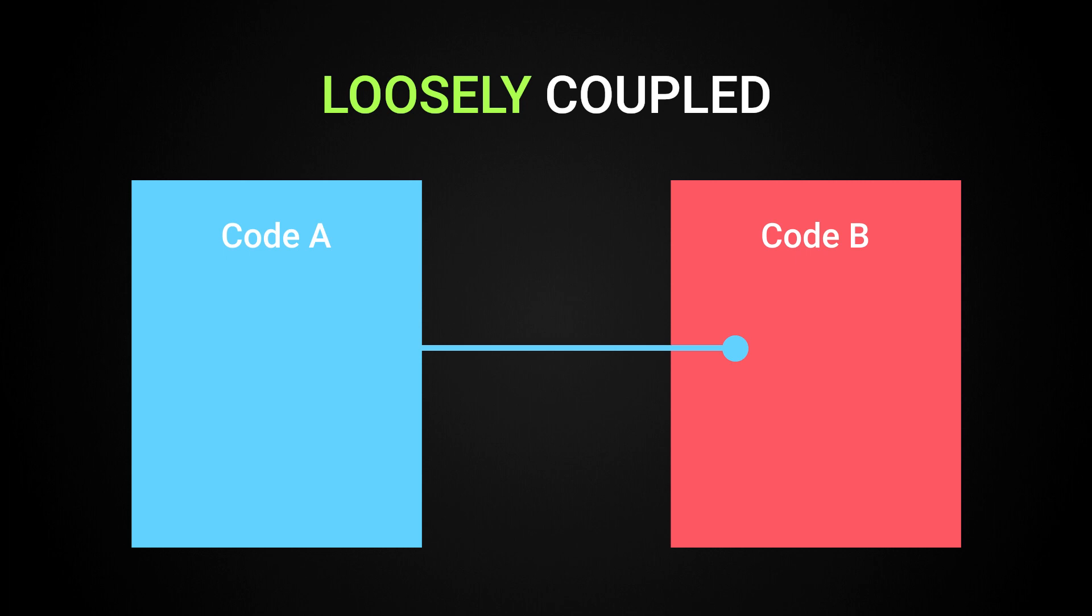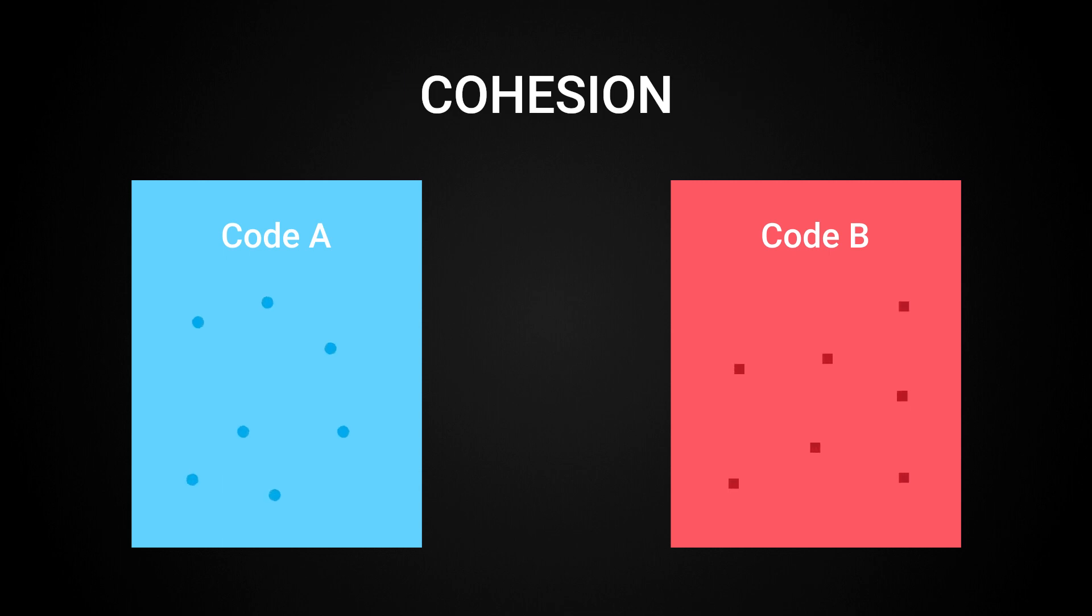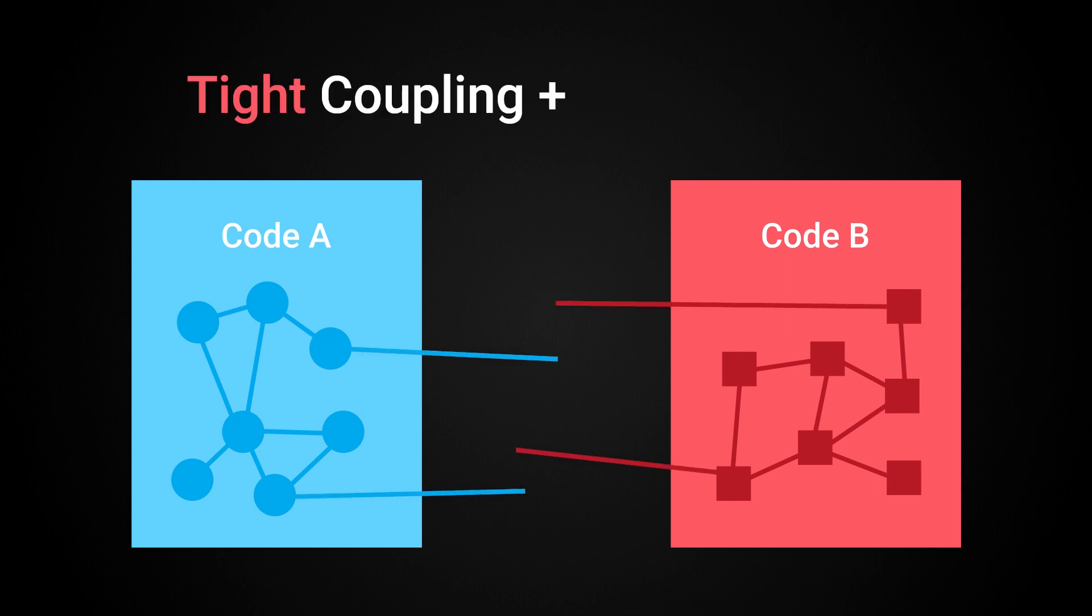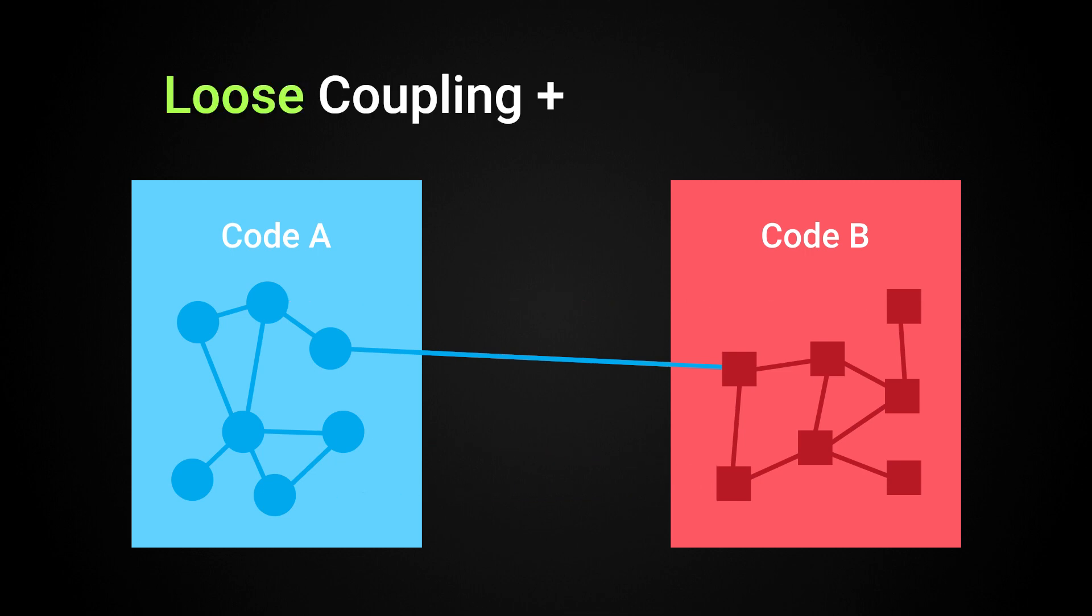When you hear coupling, you'll often also hear of a very related term, cohesion. While coupling refers to how much two parts of your system depend on each other, cohesion refers to how well the code within a single part fits together. Often when you have tight coupling, you'll end up with low cohesion. And when you have low coupling, you'll often have high cohesion.